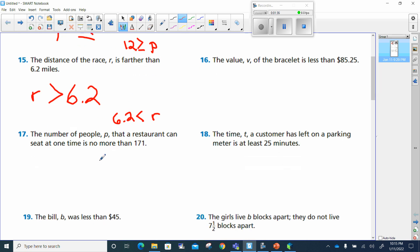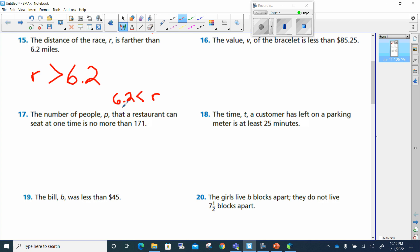Number 17. The number of people p that a restaurant can seat at one time is no more than 171. So we have 171, no more than. That means at the maximum 171, so it can be less than 171 or equal to 171. And that would be p is less than or equal to 171.